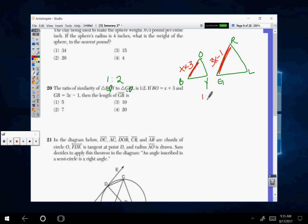it's a 1 to 2 ratio, is twice as large. So this side here, 3X minus 1, is equal to twice the length of X plus 3.